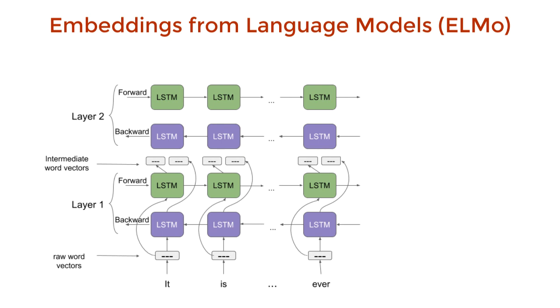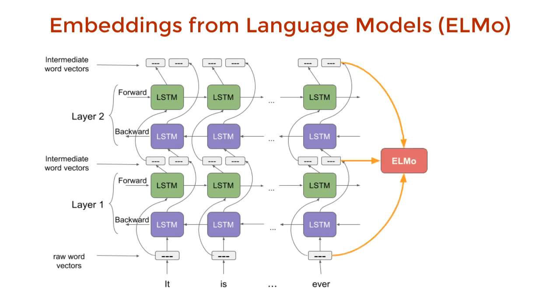ELMO has two such bi-RNNs. So we have another similar type of context vector for every word. And then we take the weighted sum of the two context vectors and the naive input to get the final word embedding. So we got context with ELMO. Nice.